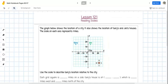So we're looking at page 89, lesson 12.1, reading scales. We talked about reading scales last week, looking at a graph and understanding what the information on the graph means. Sometimes it requires reading scales that are given to you on the graph and deciphering what the data is meant to tell you. The scale on each axis represents miles.